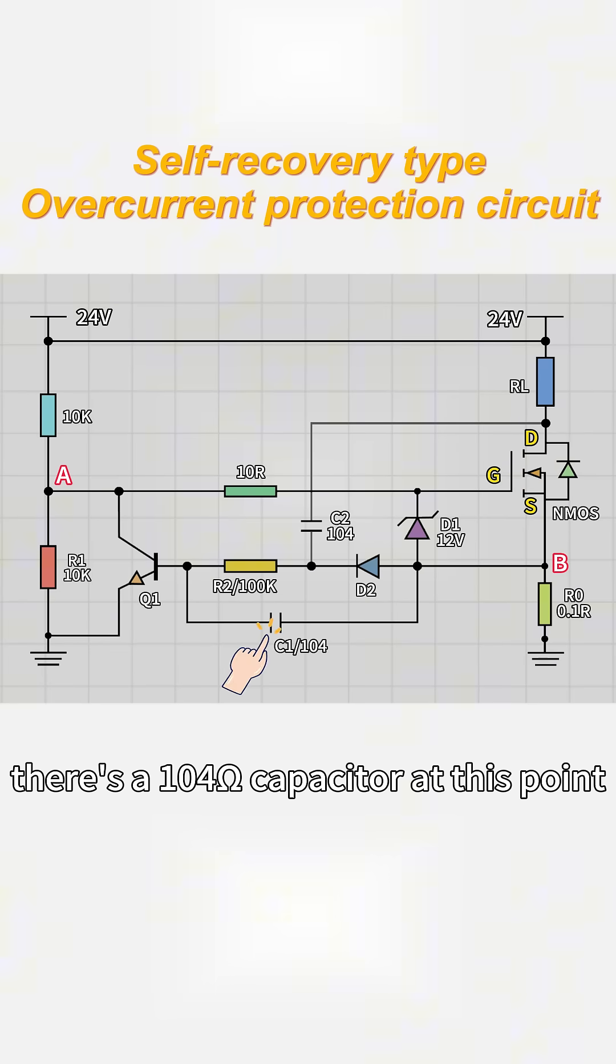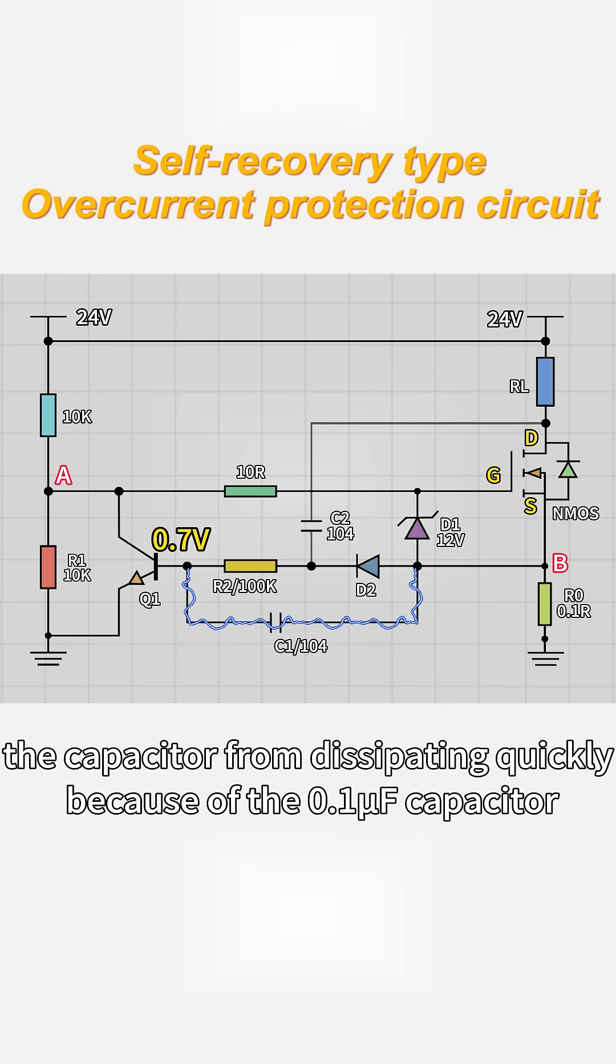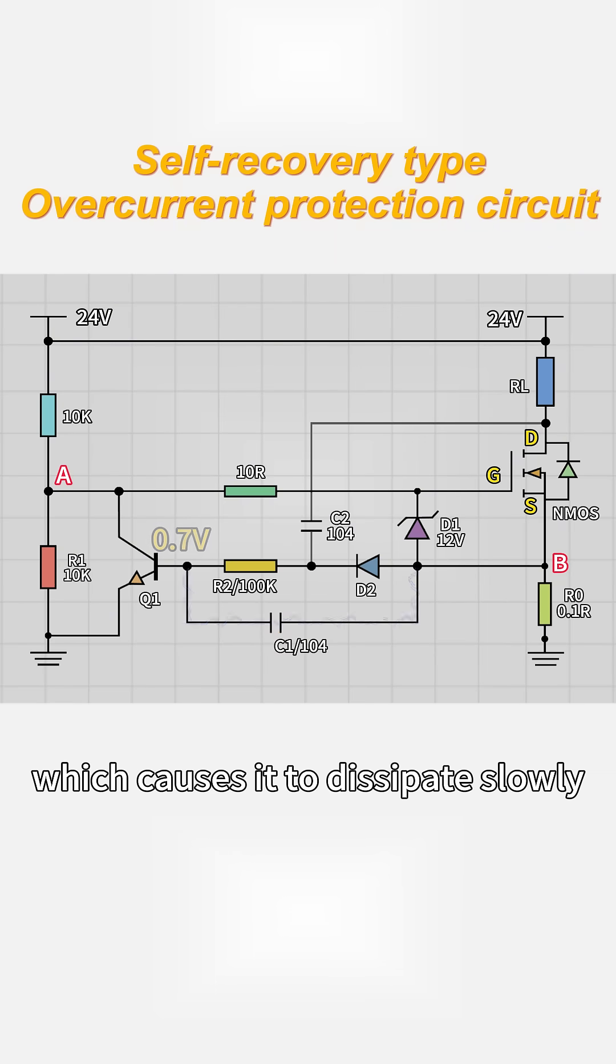However, there's a 104 ohms capacitor at this point. These two capacitors prevent the 0.7V voltage originally charged to the capacitor from dissipating quickly, because of the 0.1F capacitor, which causes it to dissipate slowly.